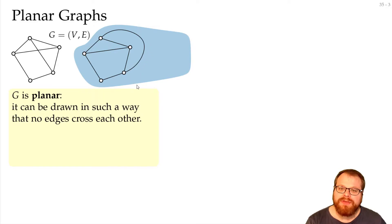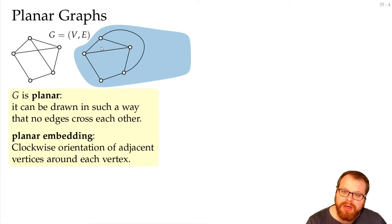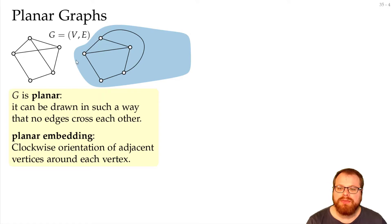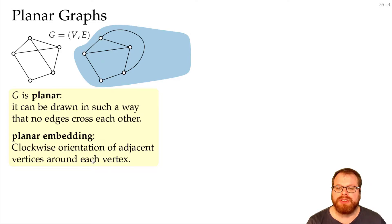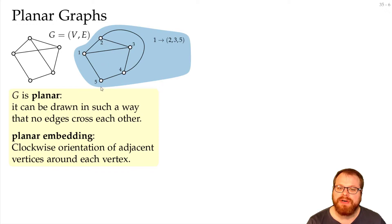A planar drawing of a graph also comes with a so-called combinatorial embedding. This tells us how the drawing looks combinatorially. For every vertex we want to have a clockwise orientation of the adjacent vertices. For vertex one, if I look around the edges, the first edge goes to two, then to three, then to five. So the clockwise orientation is two, three, five.